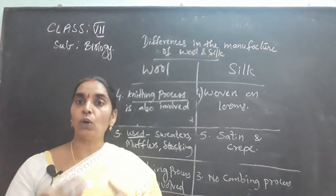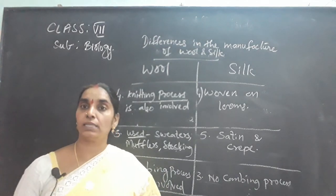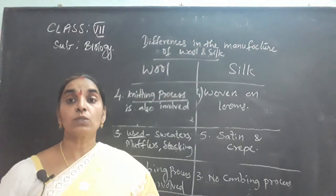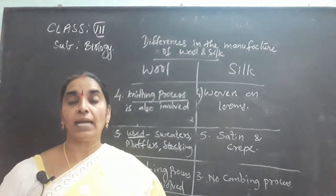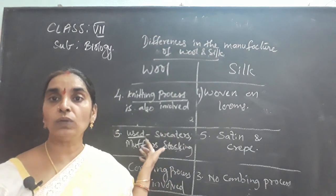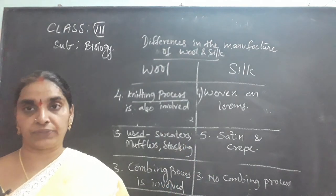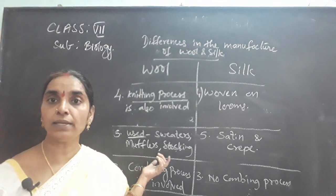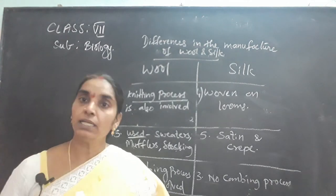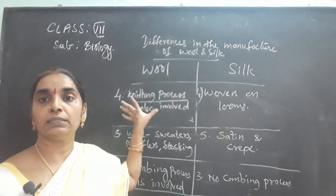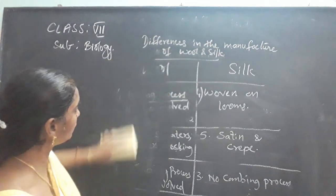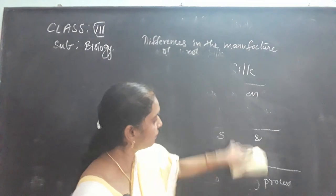We can move on to the different procedures involved in the manufacture of wool and silk, and you can extend your answers accordingly. Hope you can write this answer in your notebook for the next class. Wool is used to manufacture sweaters, mufflers, stockings, etc., whereas silk is used to produce satin and crepe. Now, about the differences between knitting and weaving processes.